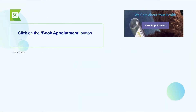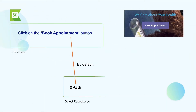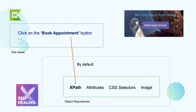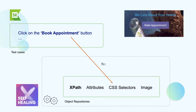With self-healing enabled, when Katalon Studio fails to identify an object via its default locator, it will continue to search for other pre-configured alternative locators to interact with that object. Thanks to this, the test execution can still be running rather than failing due to 'unable to find element' errors.